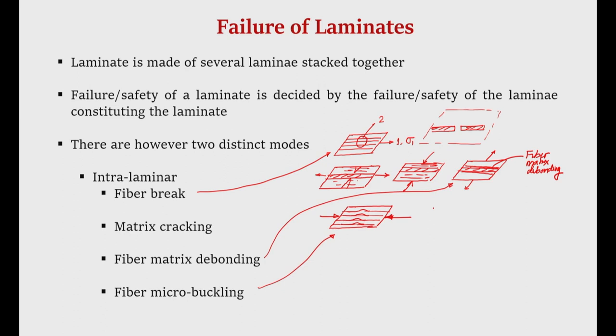These are the different intra-laminar failures — the failure of a lamina. In our macro mechanical analysis of lamina, when we discussed strength theories, we represented each lamina by its average properties and discussed different failure theories. In the case of independent theories like maximum stress or maximum strain theories, we could also see the mode of failure — whether the lamina failed due to longitudinal tensile, transverse tensile, longitudinal compression, transverse compression, or in-plane shear. In the case of interactive theories like Tsai-Hill or Tsai-Wu, this mode identification is not possible.